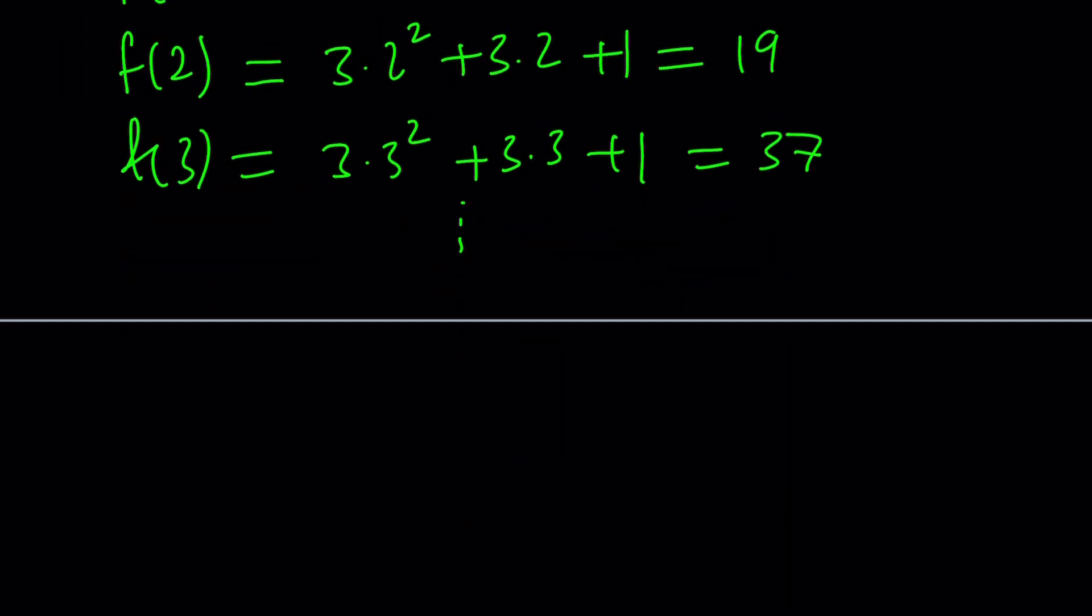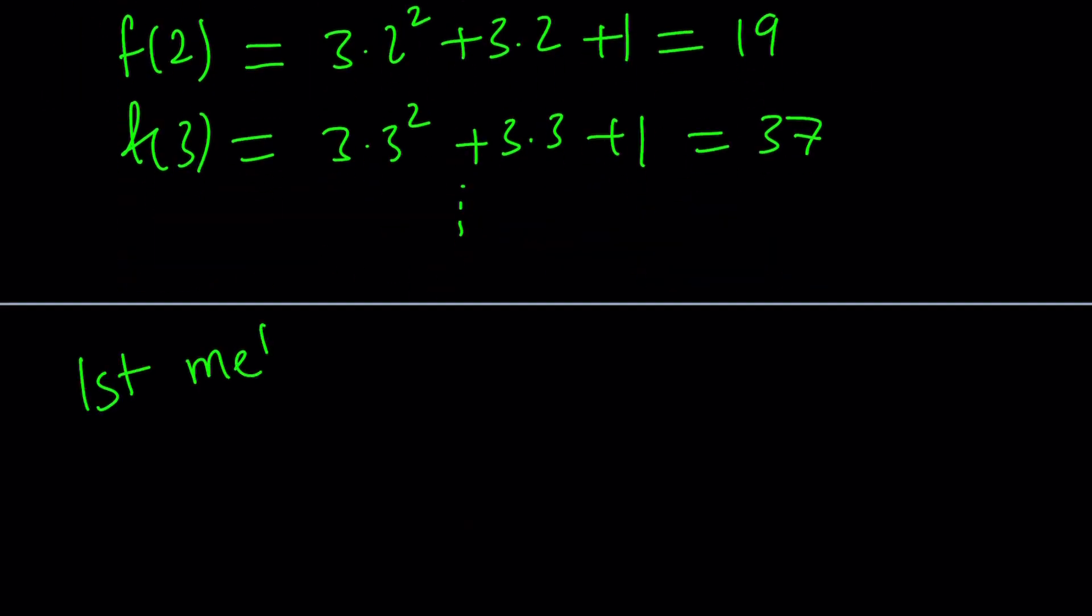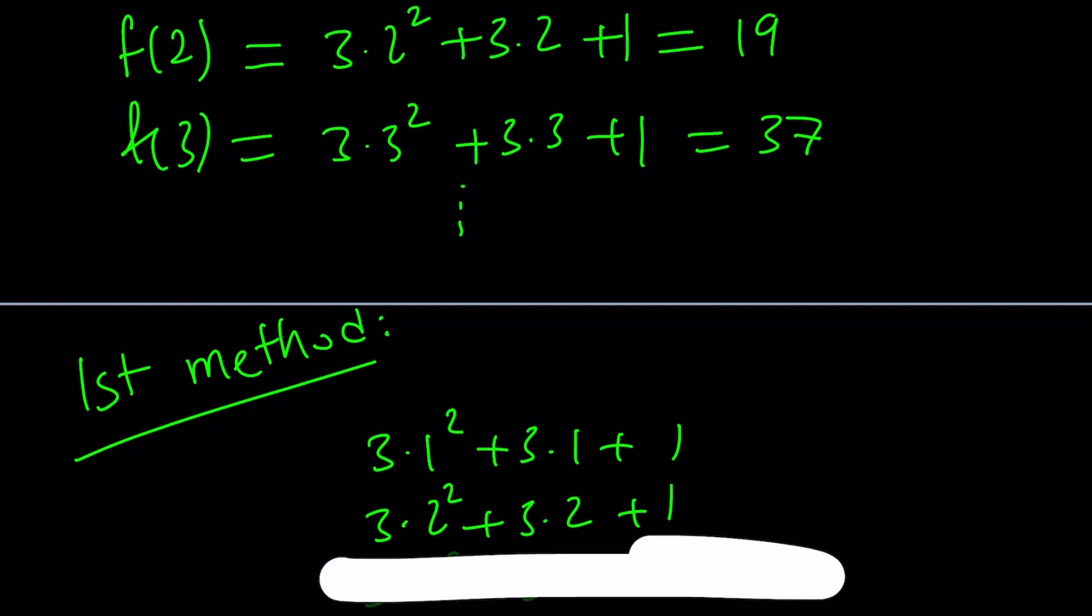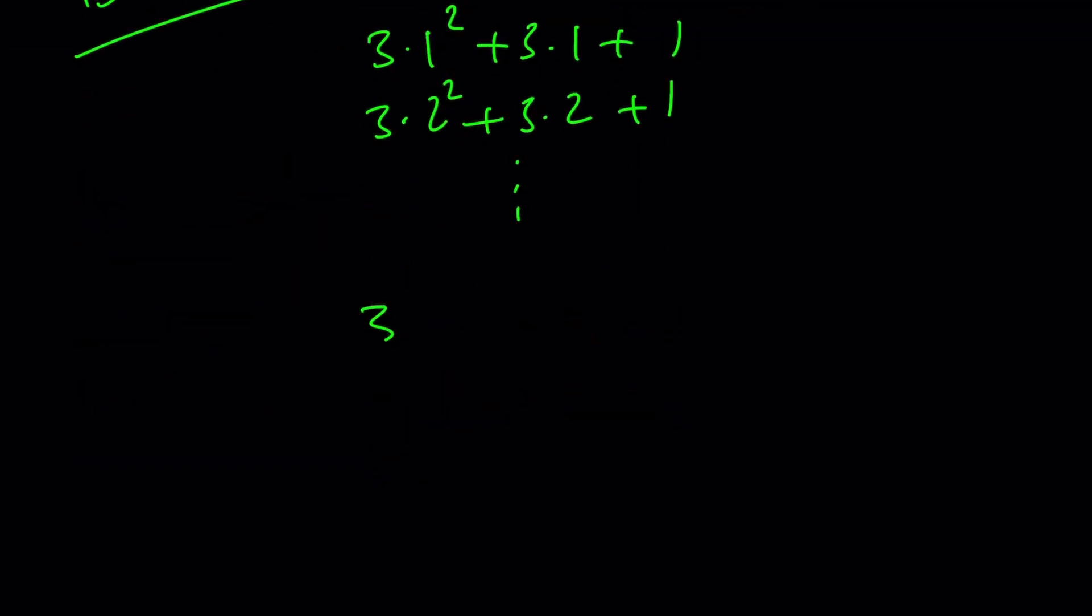So here's what we're going to do. First method. I'm going to write the same thing, but my goal is to find the pattern. So let's go ahead and do it. 3 times 1 squared plus 3 times 1 plus 1, and 3 times 2 squared plus 3 times 2 plus 1, and then 3 times 3 squared plus 3 times 3 plus 1. I don't think I need to write the third row. I'm going to write the last one, which is 3 times 10 squared plus 3 times 10 plus 1.